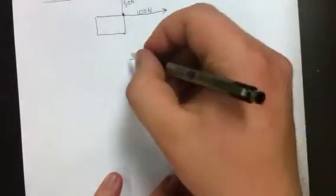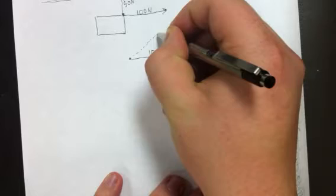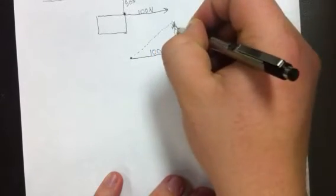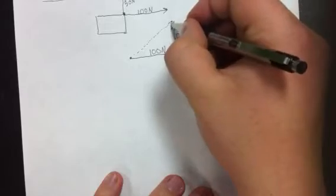Now, the reason we draw it this way is because if you connect, if you draw a dotted line between the tail of one vector and the head of the other, that will give you your resultant vector. Our vector should look something like this.